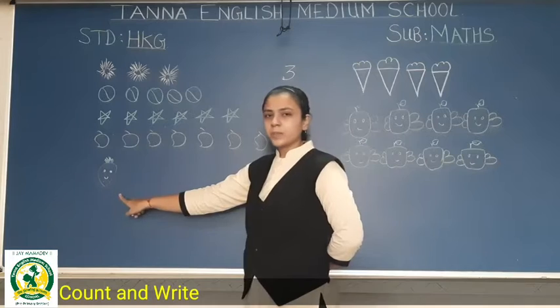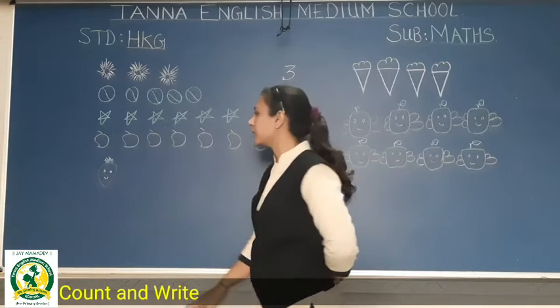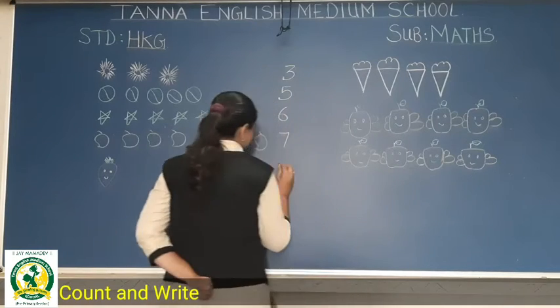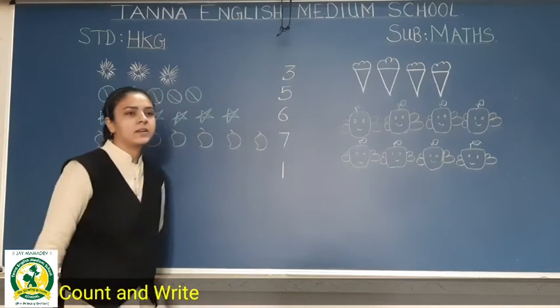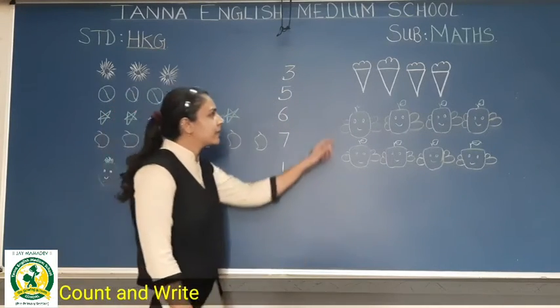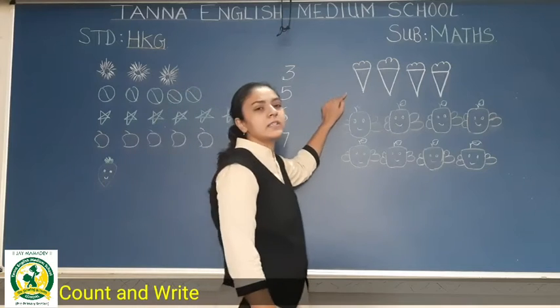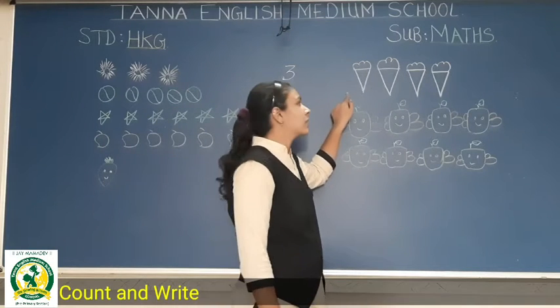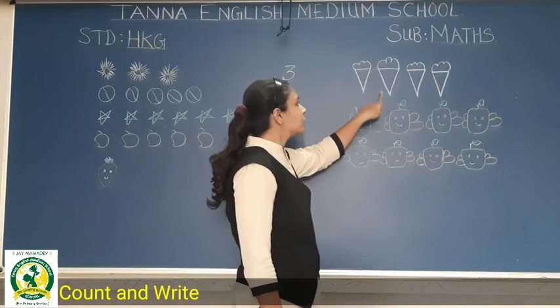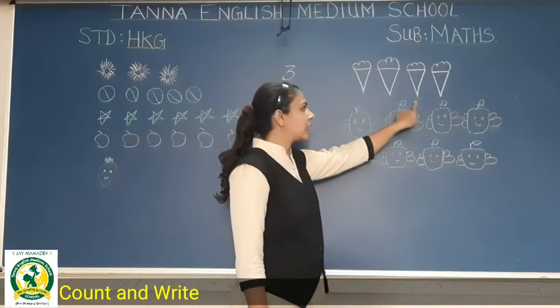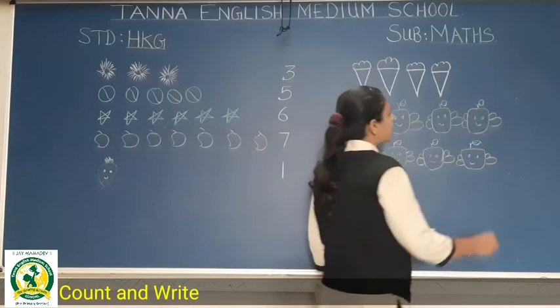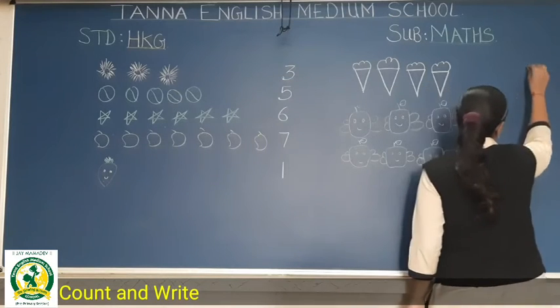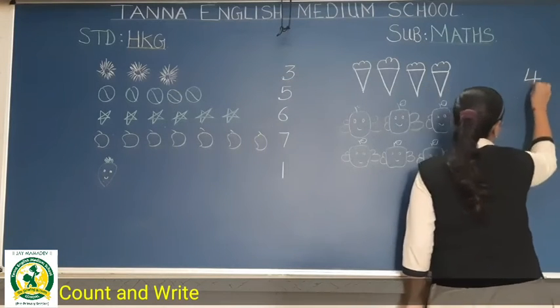One strawberry. Okay? One. So number one will be right here. Next one is ice cream cones. One, two, three, four. So four ice cream cones.